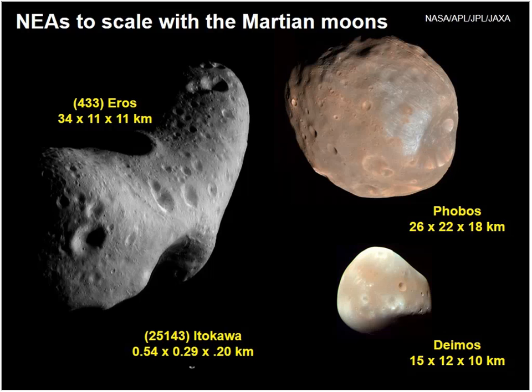Let's look at pictures of near-Earth asteroids compared to the Martian moons. Phobos is about 26 kilometers and Deimos about 15 kilometers. Compare that to 433 Eros, the biggest near-Earth asteroid at 34 kilometers — imaged by the NEAR spacecraft in 2000. And compare that to asteroid Itokawa, which is a little more than 500 meters — about five football fields long. This was the target of the first Hayabusa mission.